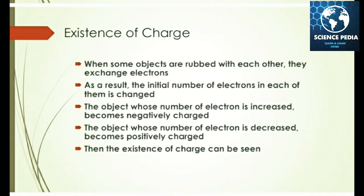Now another lesson: existence of charge. When some objects are rubbed with each other, they exchange electrons. As a result, the initial number of electrons in each changes. The object whose number of electrons increases becomes negatively charged, and the object whose number of electrons decreases becomes positively charged. This is how the existence of charge can be observed.